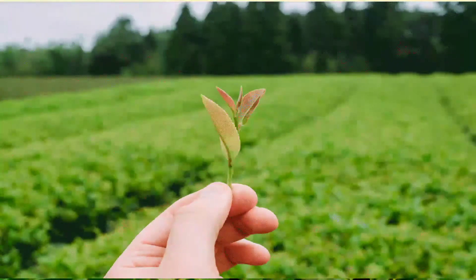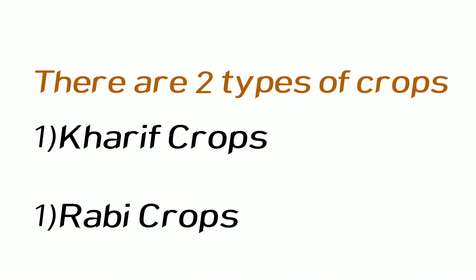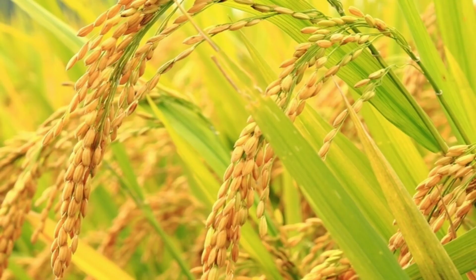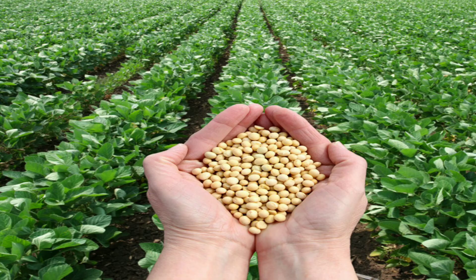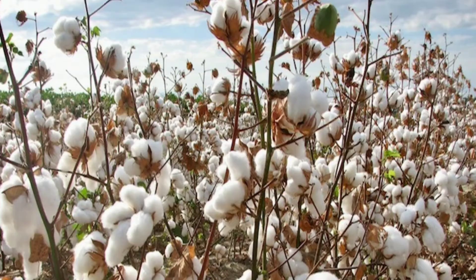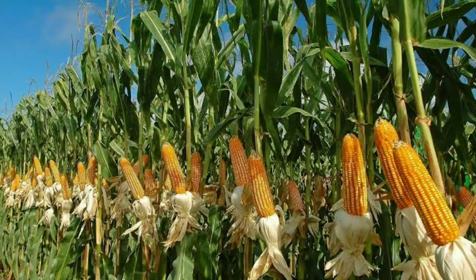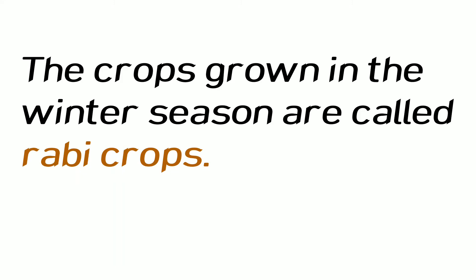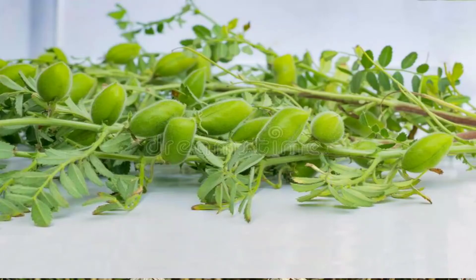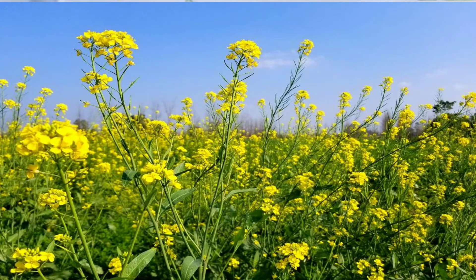In India, crops are mainly divided into two types: Kharif crops and Rabi crops. The crops which are grown in the rainy season are called Kharif crops — for example, paddy, soybean, groundnut, cotton, maize, etc. The crops which are grown in the winter season are called Rabi crops — for example, wheat, gram, peas, mustard, etc.